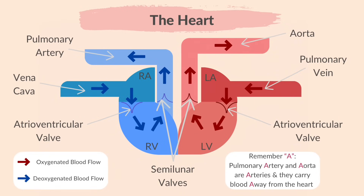Here's a small tip to remember which vessels take blood away from the heart. Remember A: the pulmonary artery and aorta are arteries and they carry blood away from the heart. Artery begins with A and so does away. Blood is pumped towards the heart in veins and away from the heart in arteries.